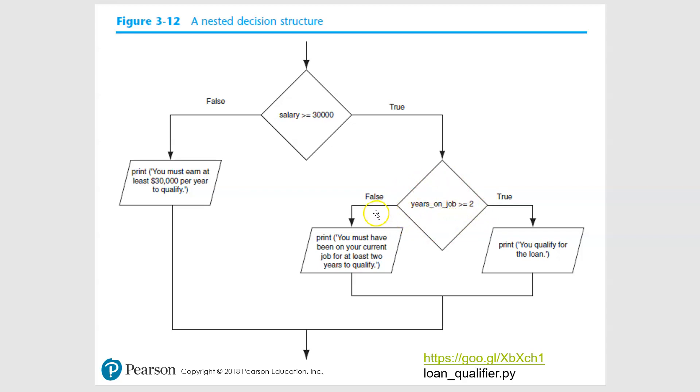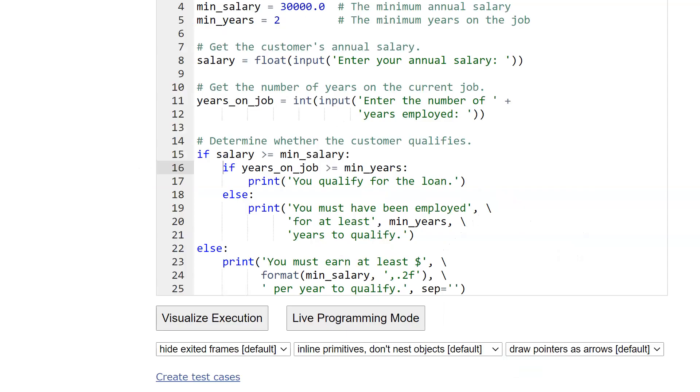If it is false, then we can say, nope, you have to have had two years, right? If we come over here and it was true, you qualify for the loan, and then we move on. Let's take a look at this code.